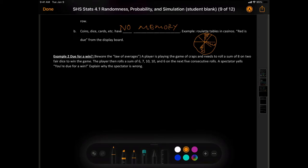Okay, let's try this example here. Due for a win? So, we're talking about beware of the law of averages. A player is playing the game of craps. It's a dice game. And needs to roll a sum of eight on two fair chances to win the game. So, sum means plus, right? Eight would be four in each. The player then rolls a sum of six, seven, ten, ten, and six on the next five consecutive rolls. A spectator yells, you're due for a win! Explain why this spectator is wrong.